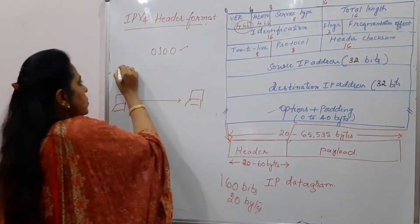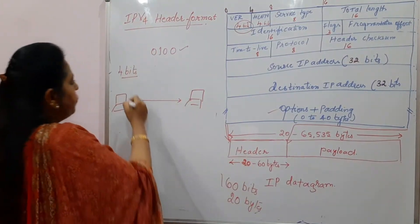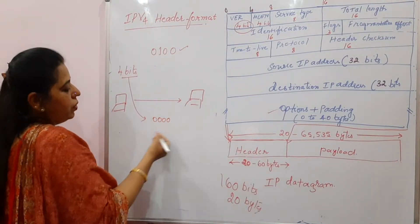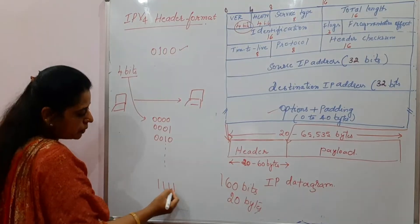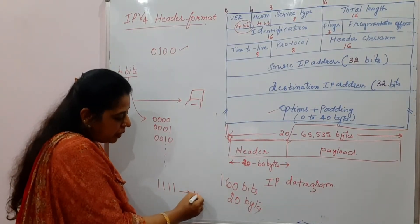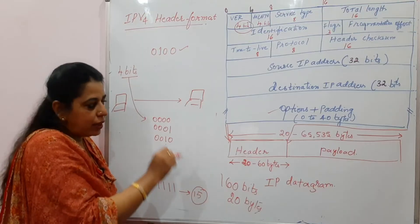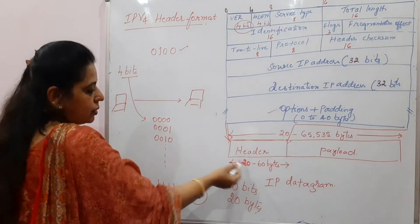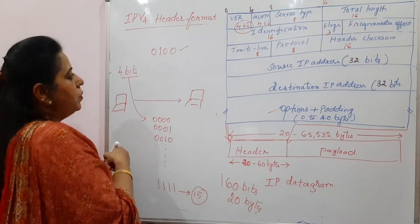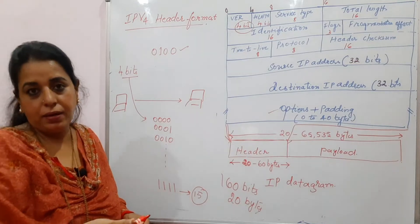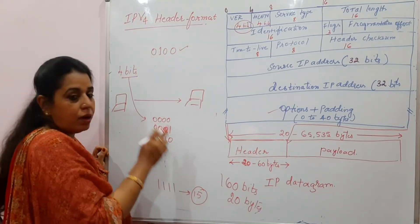Then header length — 4 bits are used to represent the header length. The minimum header length is 20 bytes. With only 4 bits, the maximum value is 1111 in binary, which is 15 in decimal. Since 15 doesn't match 20, we use a divide-by-4 and multiply-by-4 method. The sender divides the actual header size by 4 before storing it. For example, if the header size is 40 bytes, 40 divided by 4 is 10, and 10 in binary is 1010. The receiver then multiplies that value by 4 to get back the correct header size of 40 bytes.